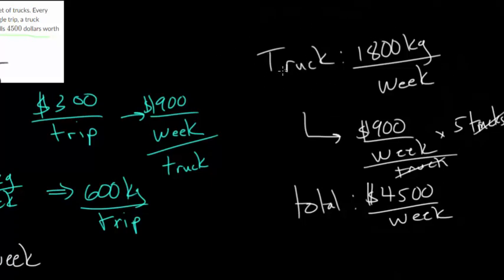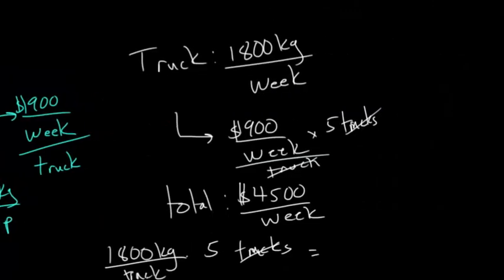We know there are five trucks, and each truck is carrying 1,800 kilograms. So 1,800 kilograms times by our five trucks. That's 1,800 kilograms per truck, so the trucks cancel out and you just get weight. We know 1,800 times five is 9,000. So in total, there are 9,000 kilograms of these apples being shipped every week.